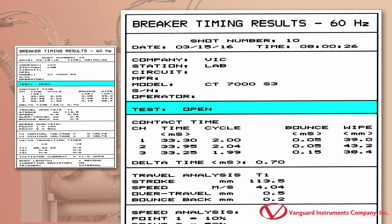The test type is shown in this section. In this case, we can see that the results are from an open test.